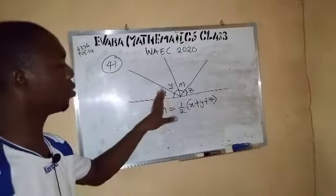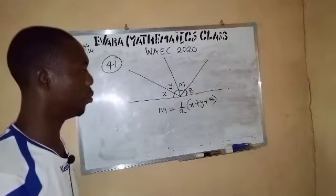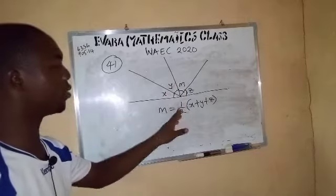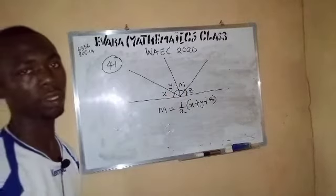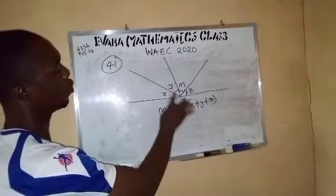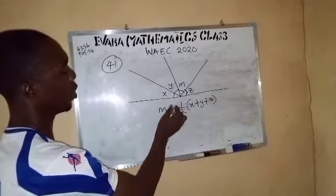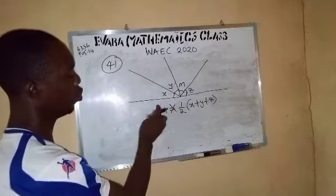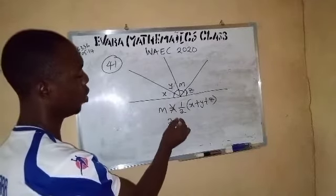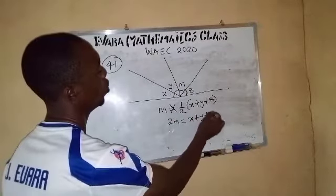The angles on this straight line are x, y, m, and z. But this m is half of the sum of the other three. So now if m is half of the sum of the other three angles, that means if I cross multiply here, 2 multiply m, 2m is equal to x plus y plus z.